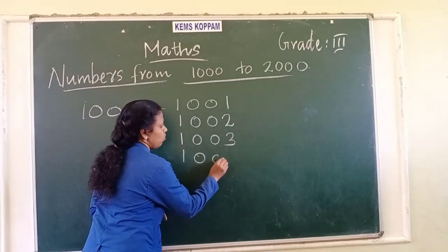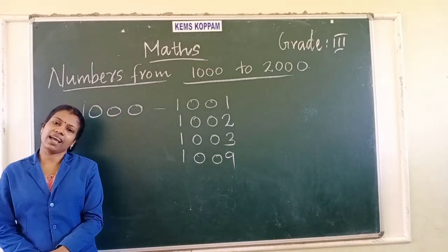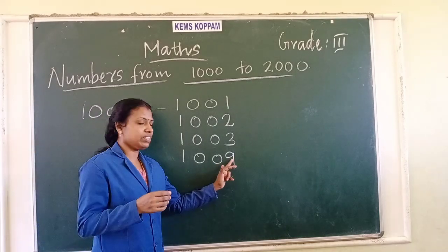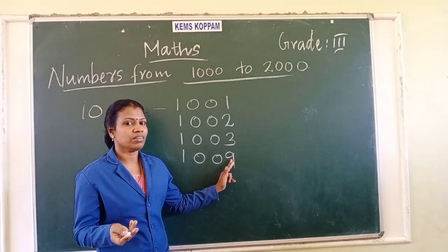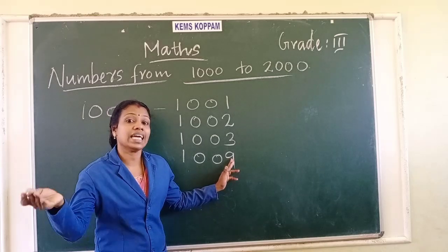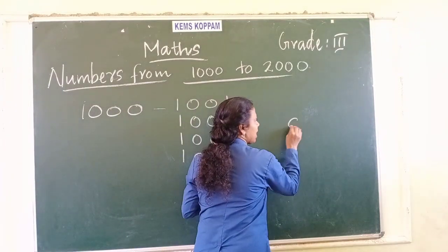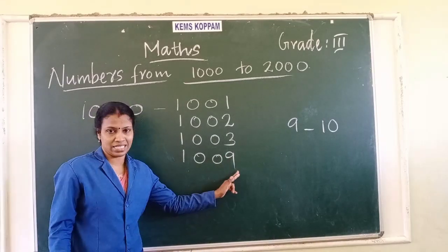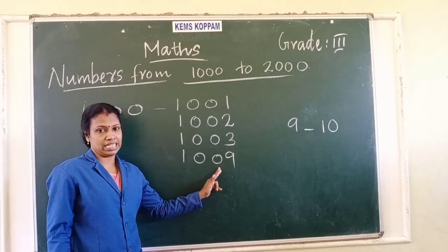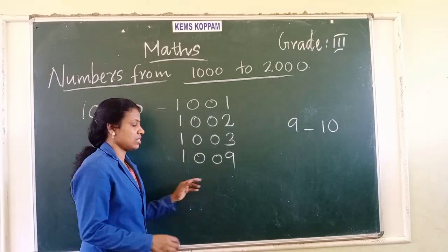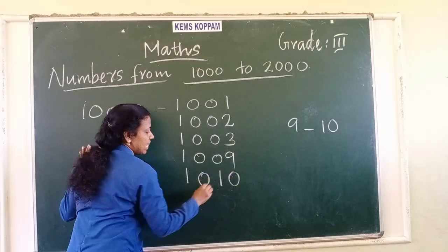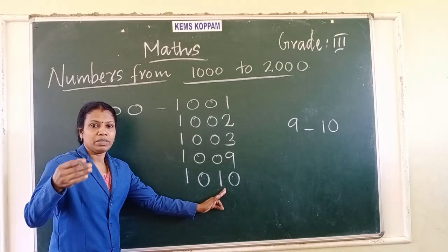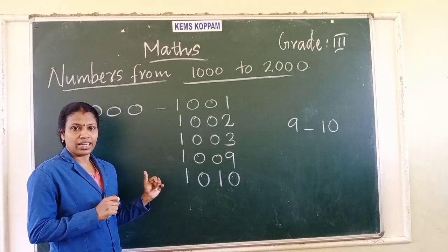Then what comes after 1,009? You just think about what comes after 9. After 9, 10 comes. So we need to change the last two places — the 1s and 10s. We can write it as 1,010 because 10 means two places: 1s and 10s.